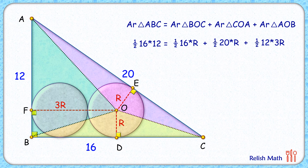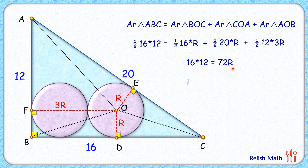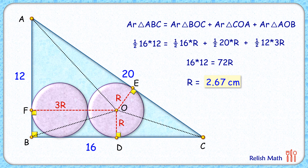Simplifying — the halves cancel — we get 16 times 12 equals 72R. Solving gives R equal to 2.67 centimeters, and that's our answer. I hope you enjoyed the solution. I will see you in the next video — take care, bye bye!